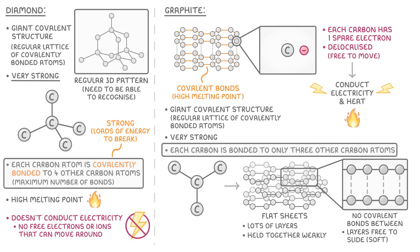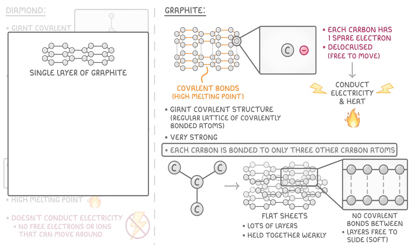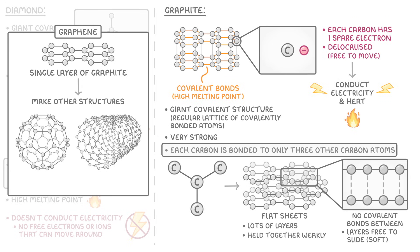Before we finish, it's worth mentioning that a single layer of graphite is known as graphene, and scientists can actually isolate these individual layers and use them to make other structures, such as spheres and tubes. We call these structures fullerenes, and we explore how they work in the next video.